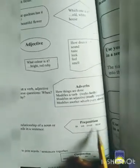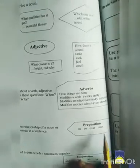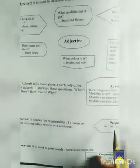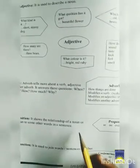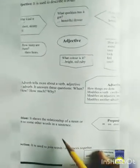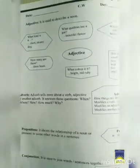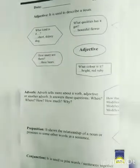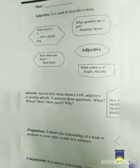For example, in, on, over, near. Means, preposition hume batata hai ki koi bhi cheez ya koi bhi shaks ya koi bhi aur insan kis jagah per hai us ki position ke baare mein batate hai.